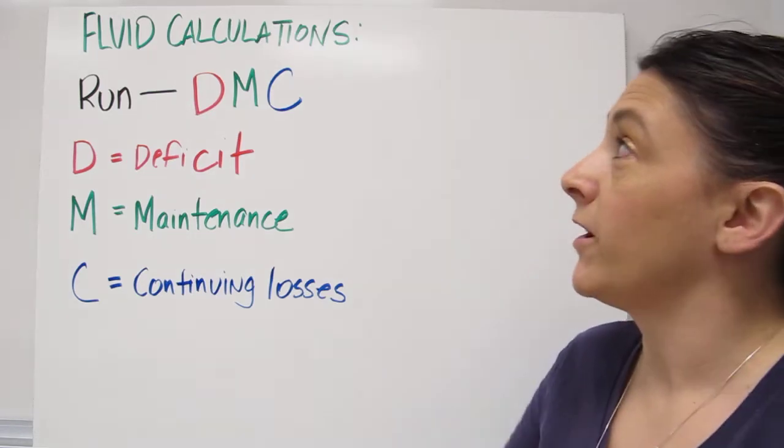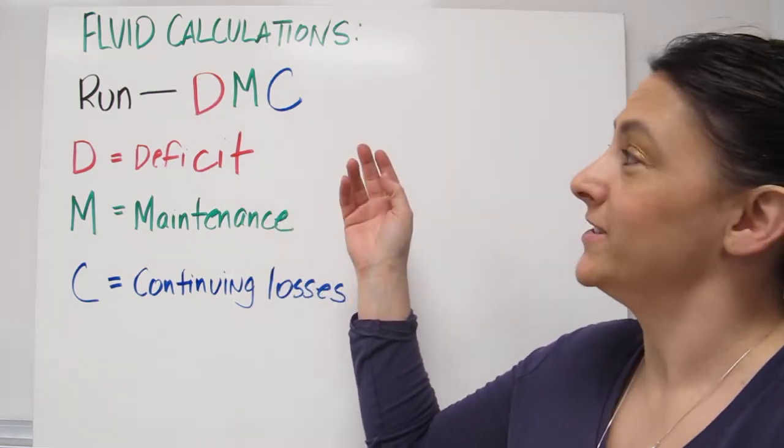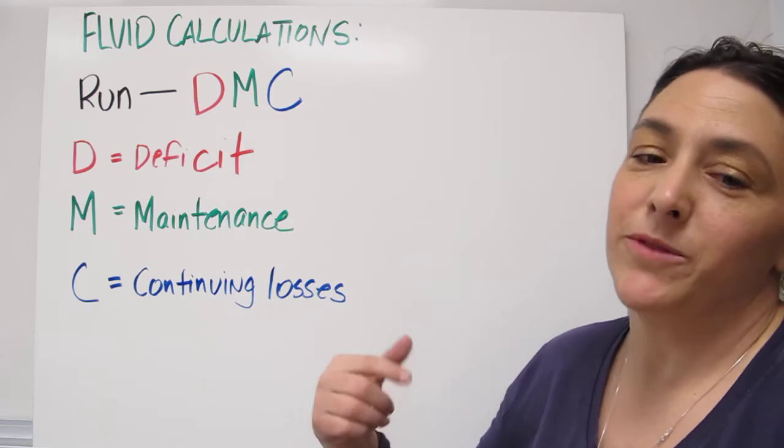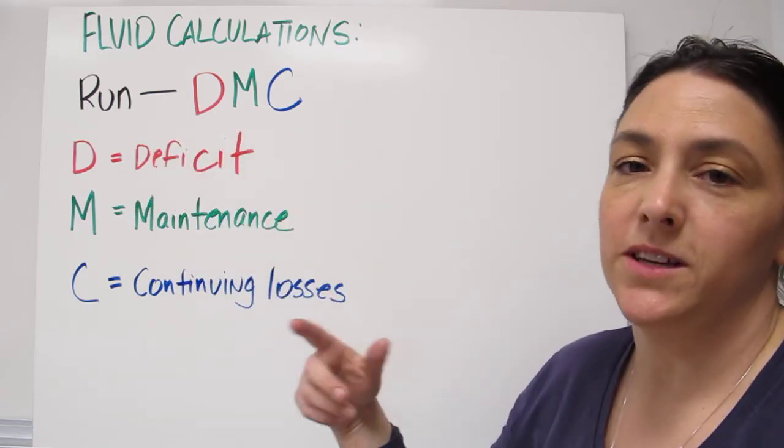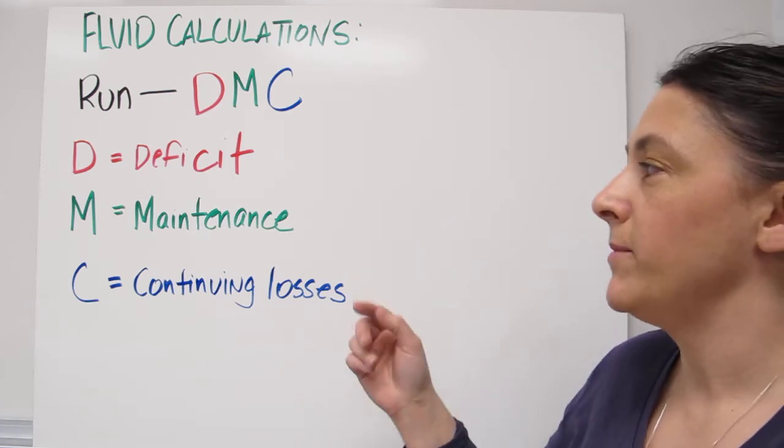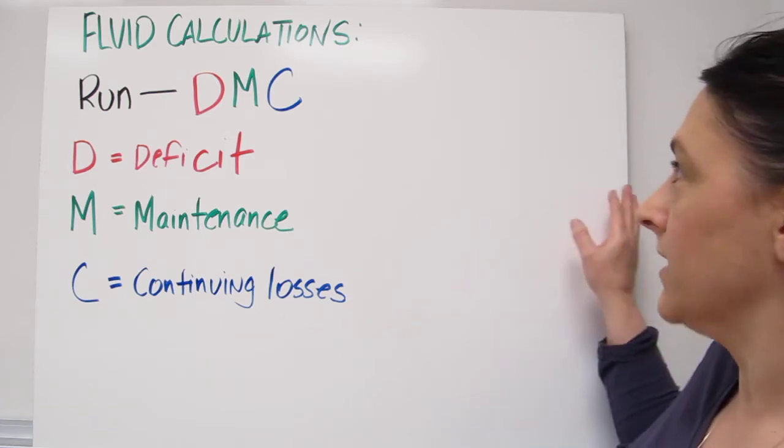Hi, today we're going to talk about fluid calculations and I use this acronym to help remember it, RUN DMC. So D equals deficit, M equals maintenance and C equals continuing losses.